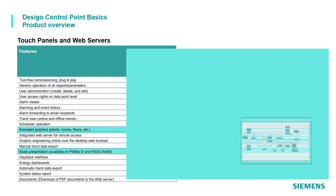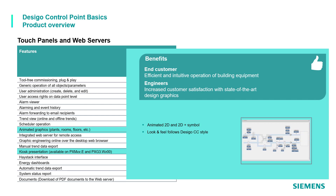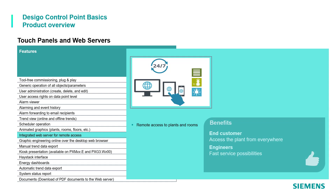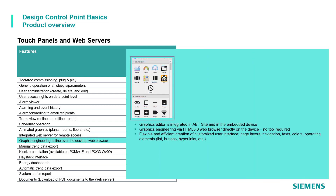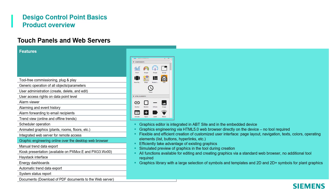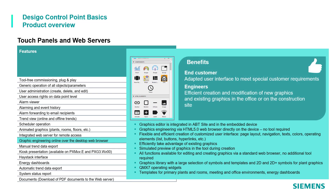Graphics are animated with 2D symbols following a DCGO CC style kiosk presentation, available only on web server devices and touch panels with embedded web servers, providing a nice and easy presentation. Being web server devices, remote access to plants and rooms is extremely easy and fast from everywhere. Graphic engineering directly over the desktop web browser provides a massive customization level with several possibilities.